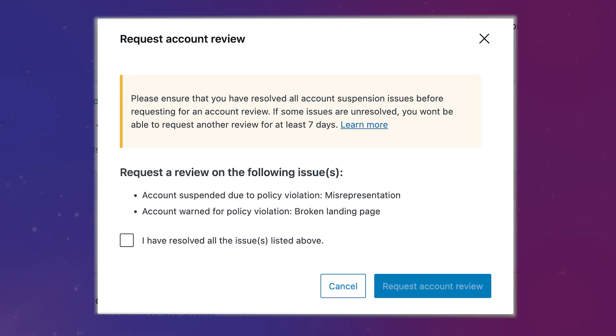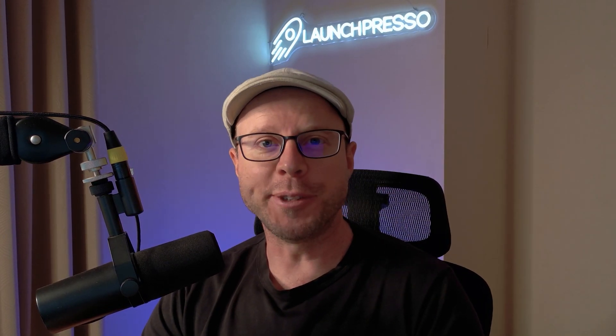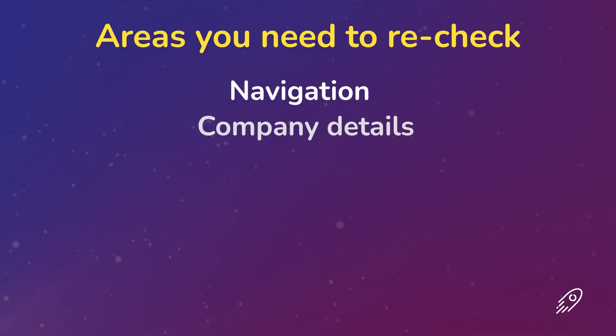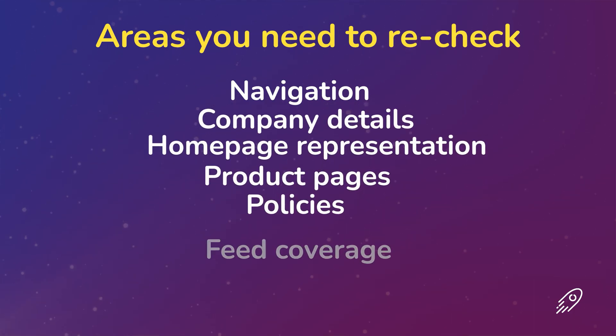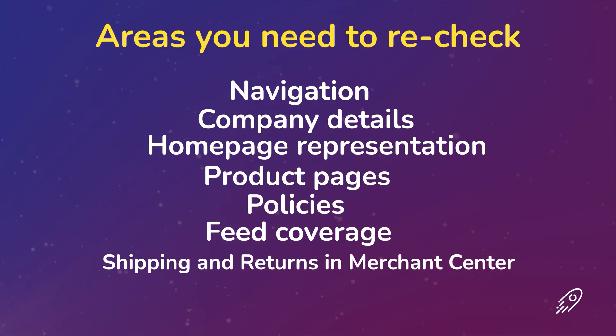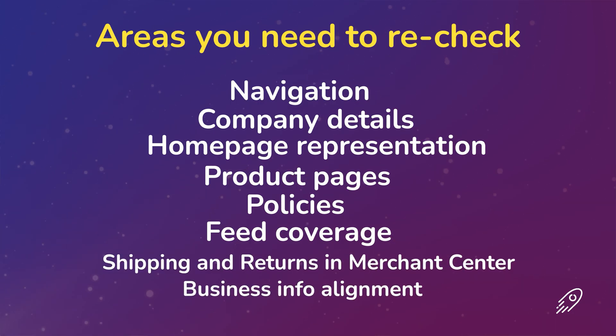Once you've made all these changes, it's time to request a review. Inside the Merchant Center, go to Account Issues and request the review there. A word of warning — don't be alarmed if your first review comes back rejected, even when everything looks correct. If that happens, go back and recheck: navigation, company details, homepage representation, product pages, policies, feed coverage, shipping and returns in the Merchant Center, and that all your business info is in alignment — then submit again. Most accounts get cleared once everything is truly consistent.